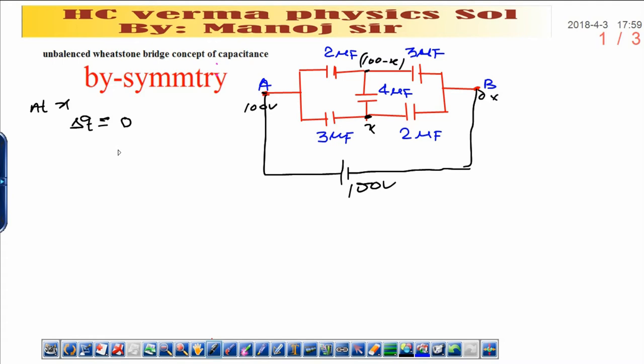Change means final minus initial and that will be zero. Now you should apply right from the 2 microfarad capacitor. What is charge? Charge is CV. C is capacitance and V is potential across that capacitance. If I write here, 2 across the 2, I can write x is potential difference.